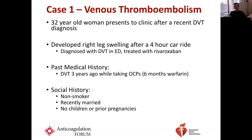We're going to present two cases and really try to have a discussion around those cases today. This first one is a case of venous thromboembolism — a 32-year-old woman who presented to clinic after a recent DVT diagnosis. She developed a DVT in her right leg after a four-hour car ride, was diagnosed on ultrasound in the emergency department, and was treated with rivaroxaban. Her past medical history revealed a DVT about three years ago while taking oral contraceptive pills. At that time, they stopped the OCPs and gave her six months of warfarin. She is a non-smoker, recently married, with no children or prior pregnancies.